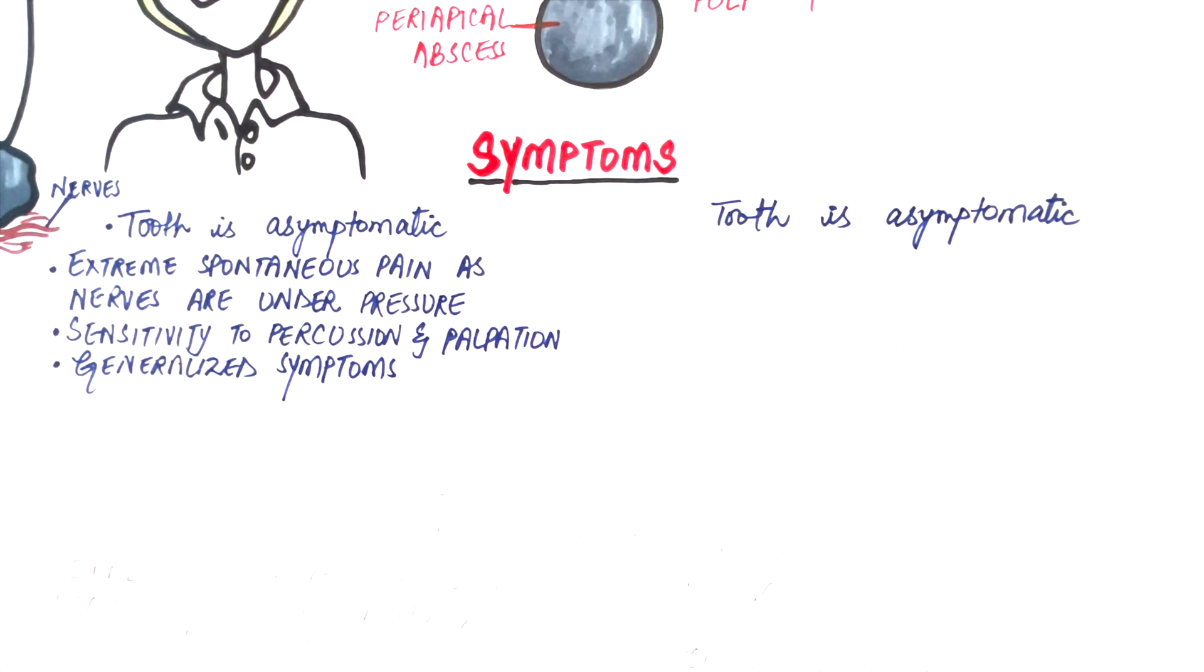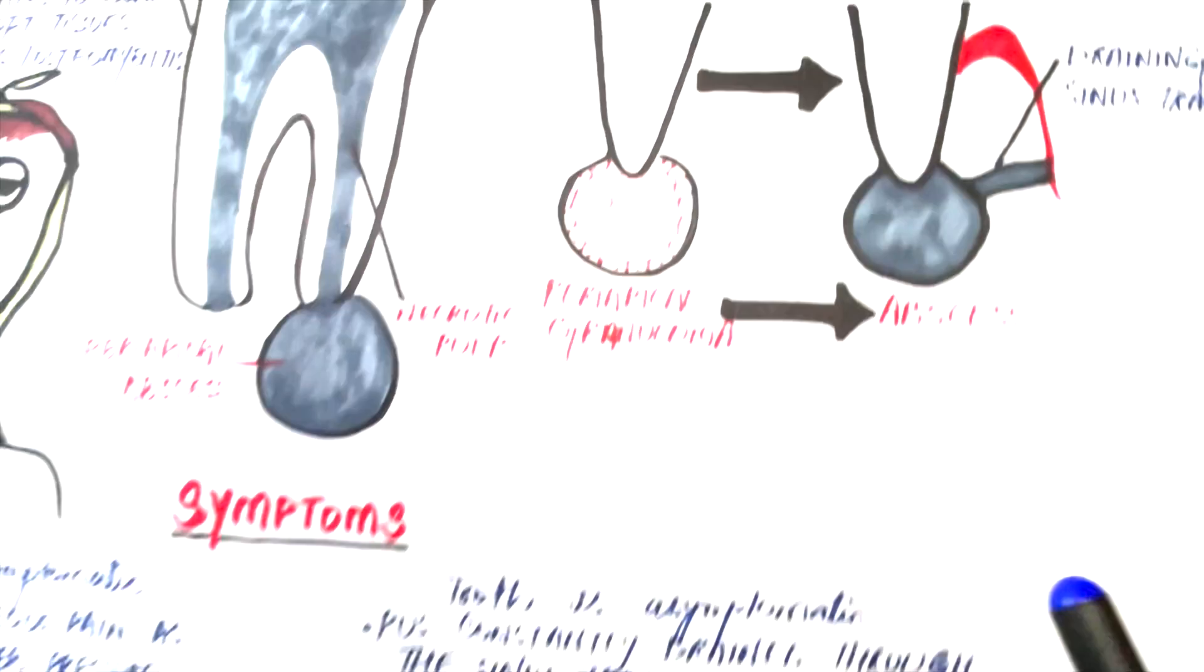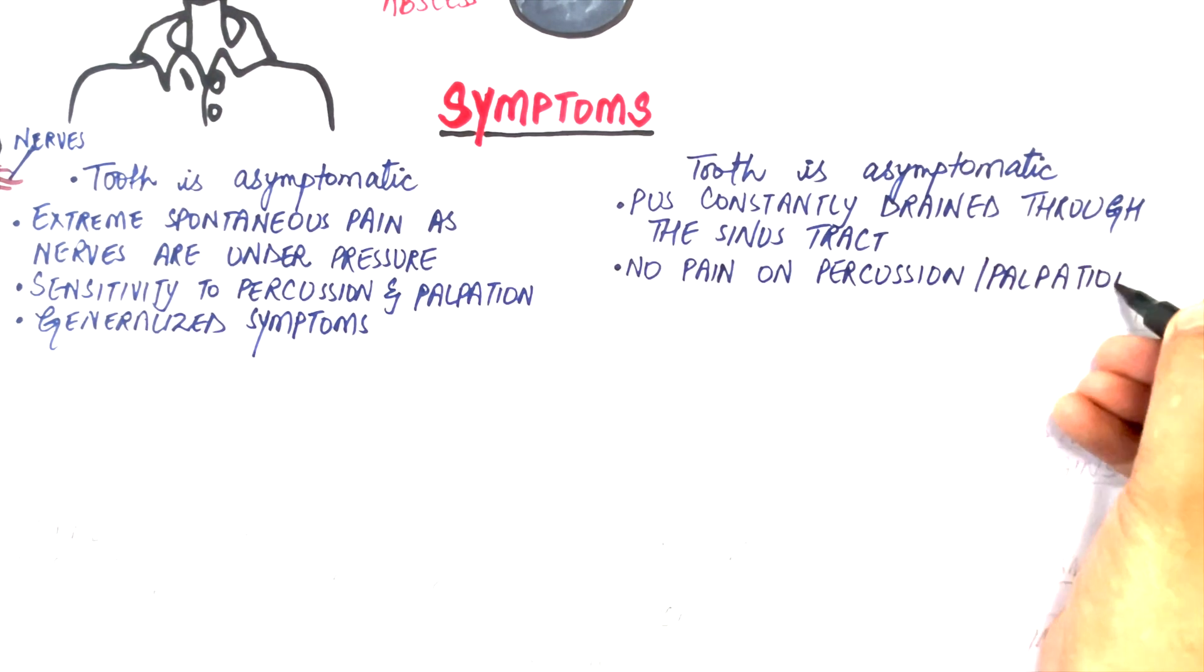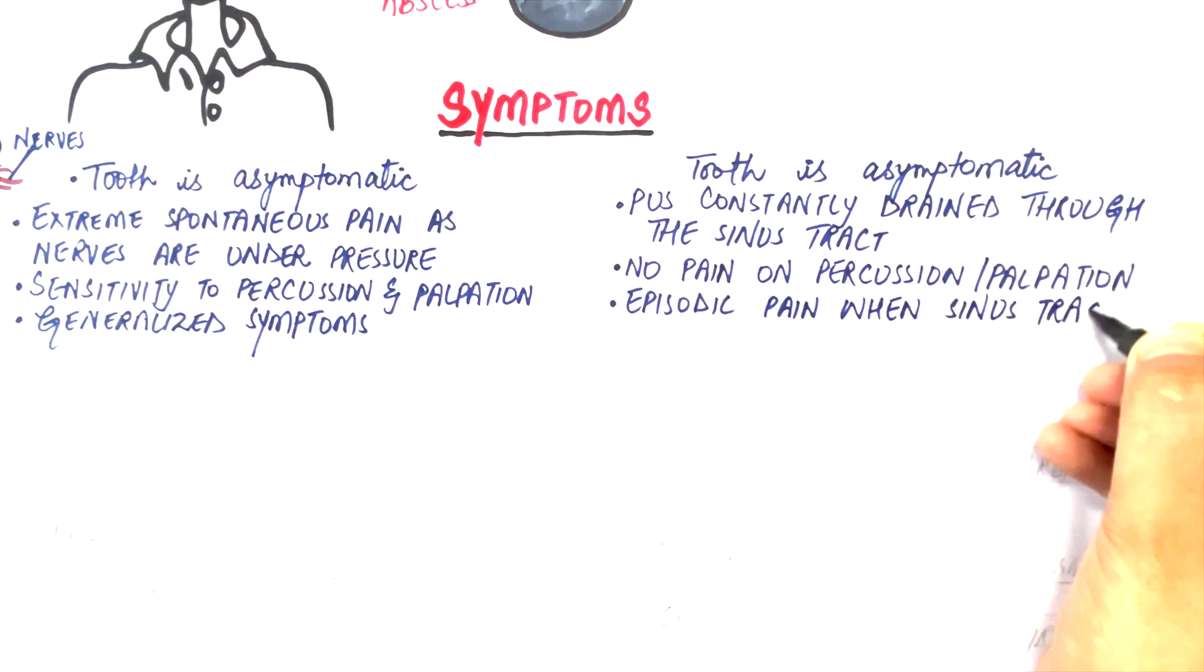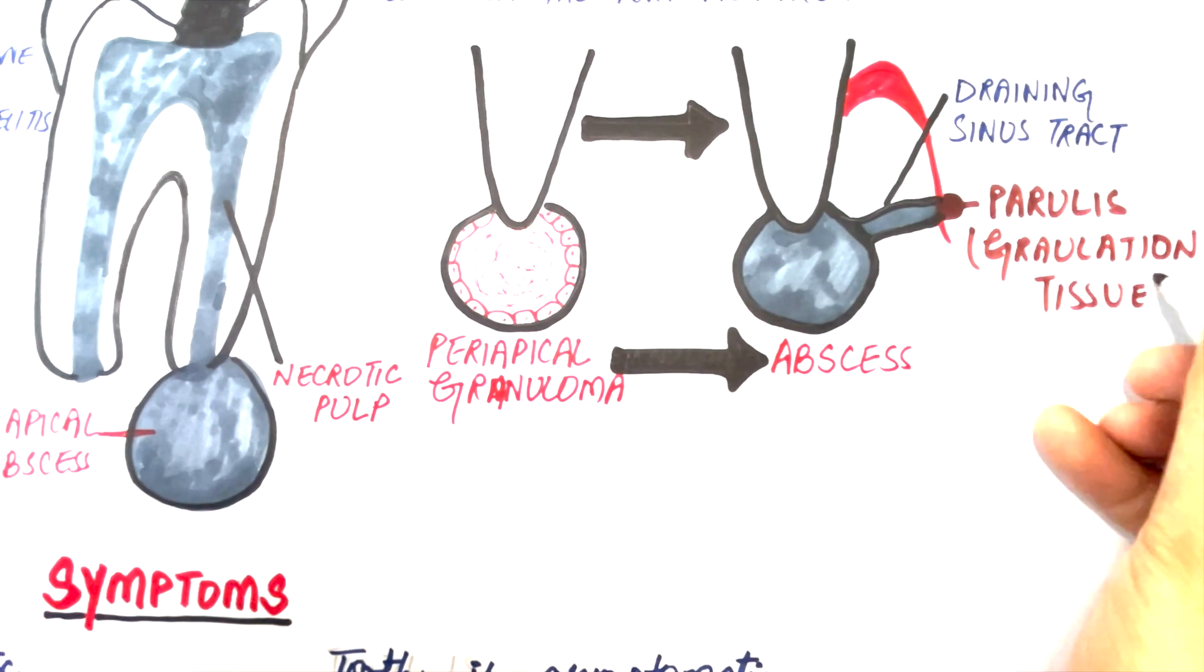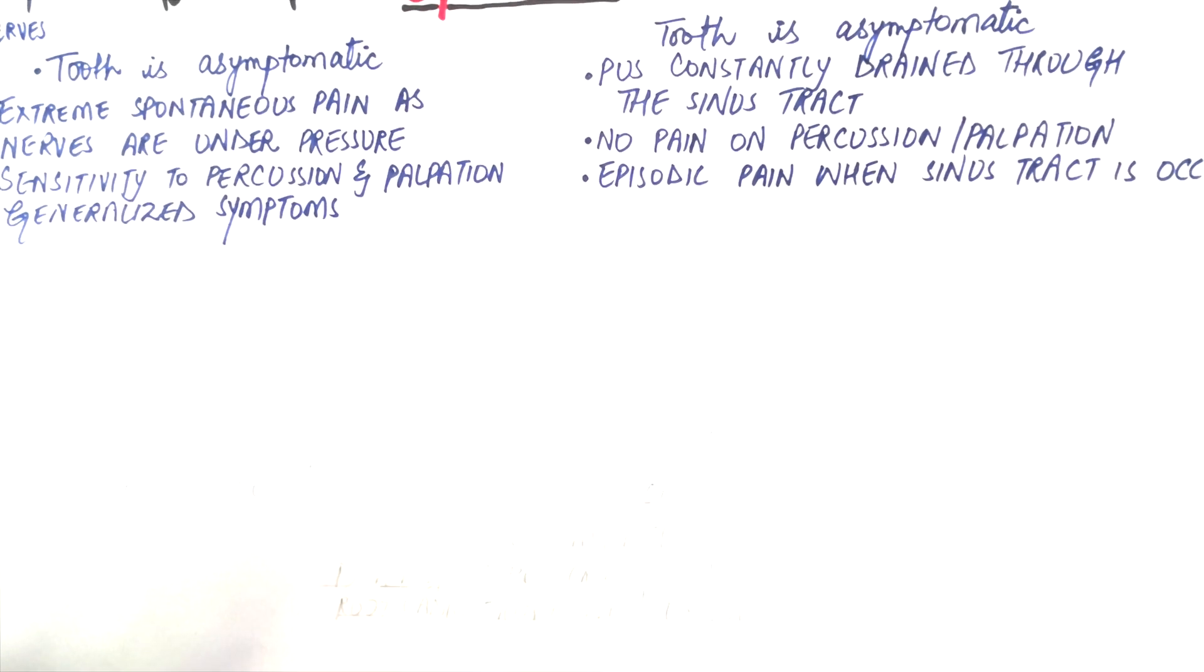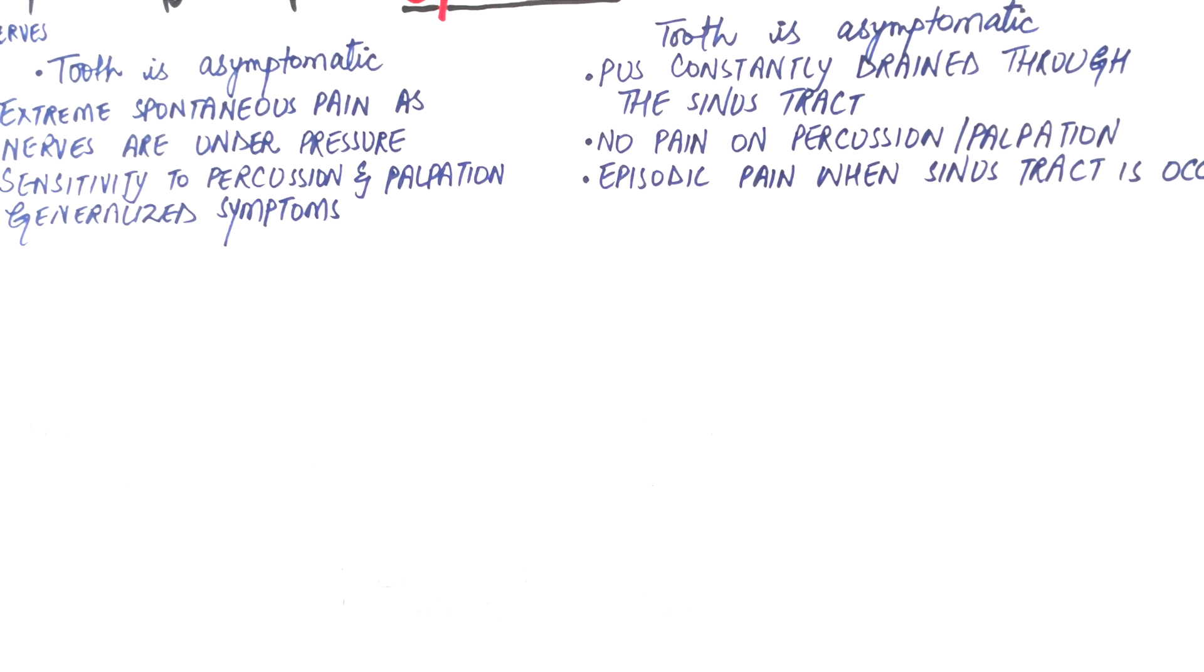In chronic apical abscess, as the pus is constantly drained through the sinus tract, the patient has no pain on percussion or palpation. In chronic apical abscess, a patient might experience episodic pain when the extraoral or intraoral opening of the sinus tract is occluded through granulation tissue at the opening of the sinus tract called the perilous. This results in pressure elevations in the periapical area and causes acute exacerbations of the chronic abscess.